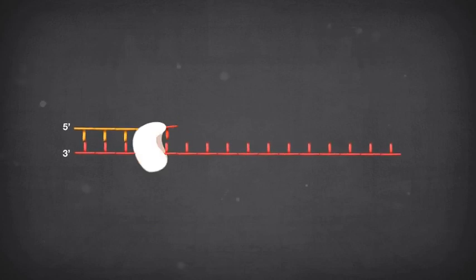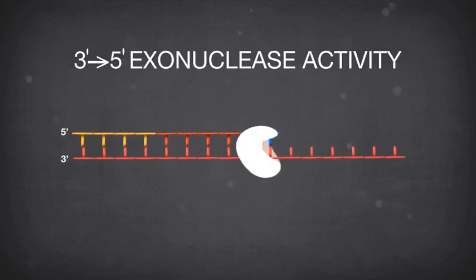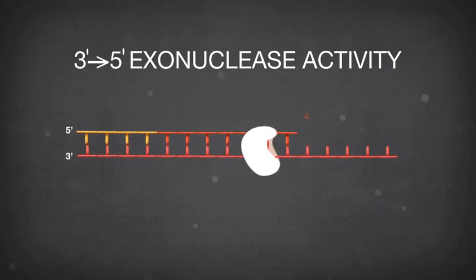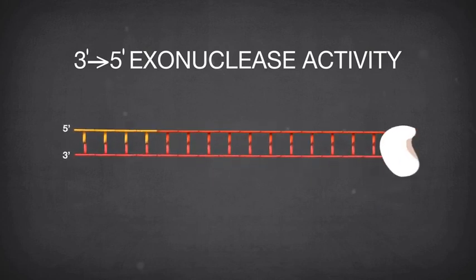Some DNA polymerases also have 3' to 5' exonuclease activity to remove mismatched nucleotides. This is also called proofreading activity.